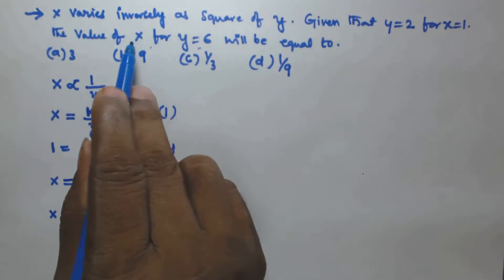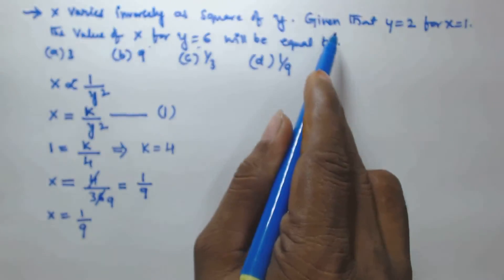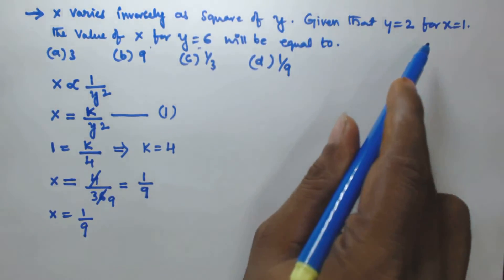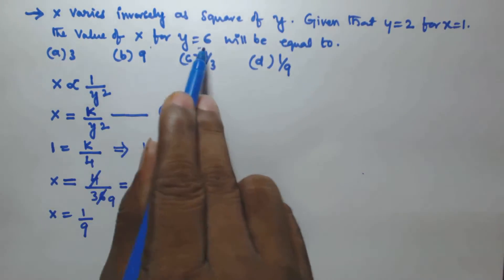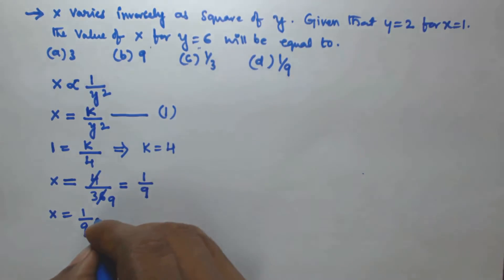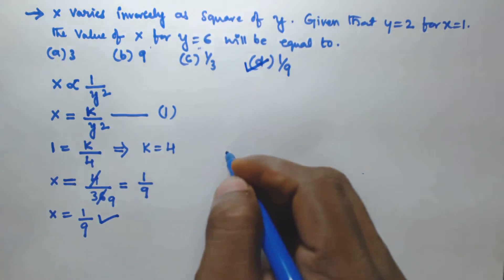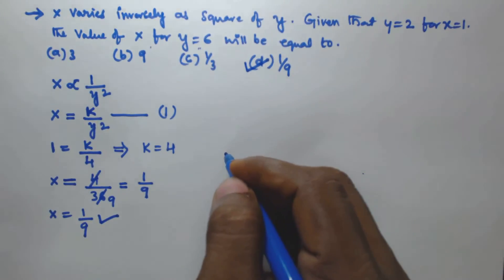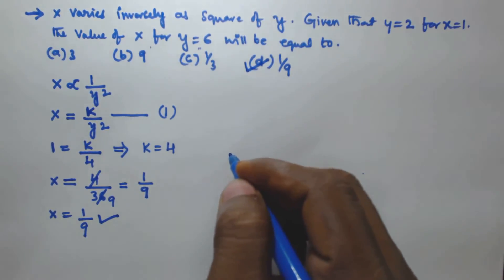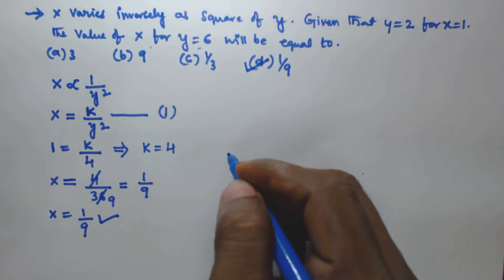So if x varies inversely as square of y, and for x equal to 1 y is equal to 2, the value of x for y equal to 6 is 1 by 9. Option d is the right answer. I hope you got this one. Thank you very much for watching. If you have any doubt please leave a comment and please subscribe to my channel.